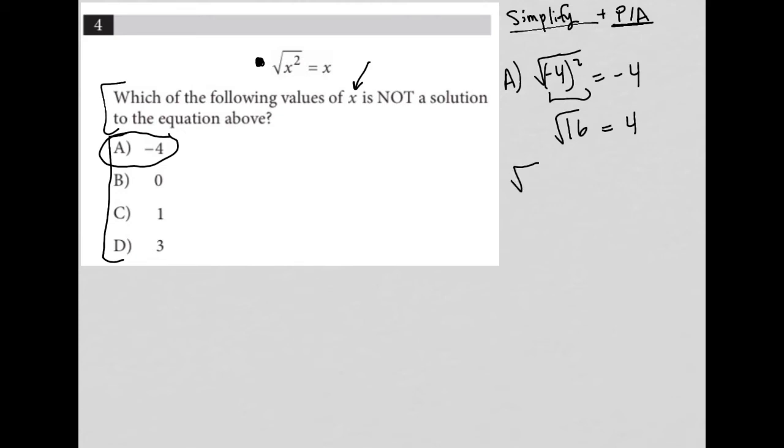Now, if you said to yourself, hold up, I thought the square root of 16 is equal to plus or minus 4, you're not far off, okay? But let's check a couple of things out, and I'll come back to why negative 4 is not a solution to the equation.